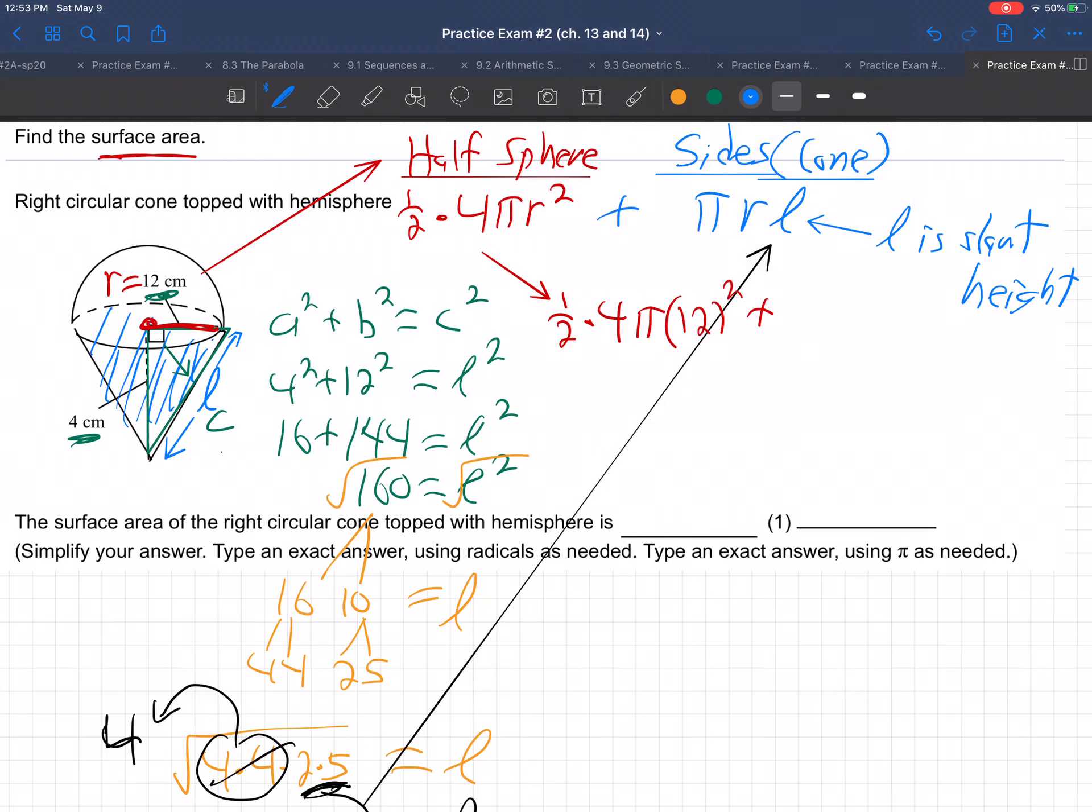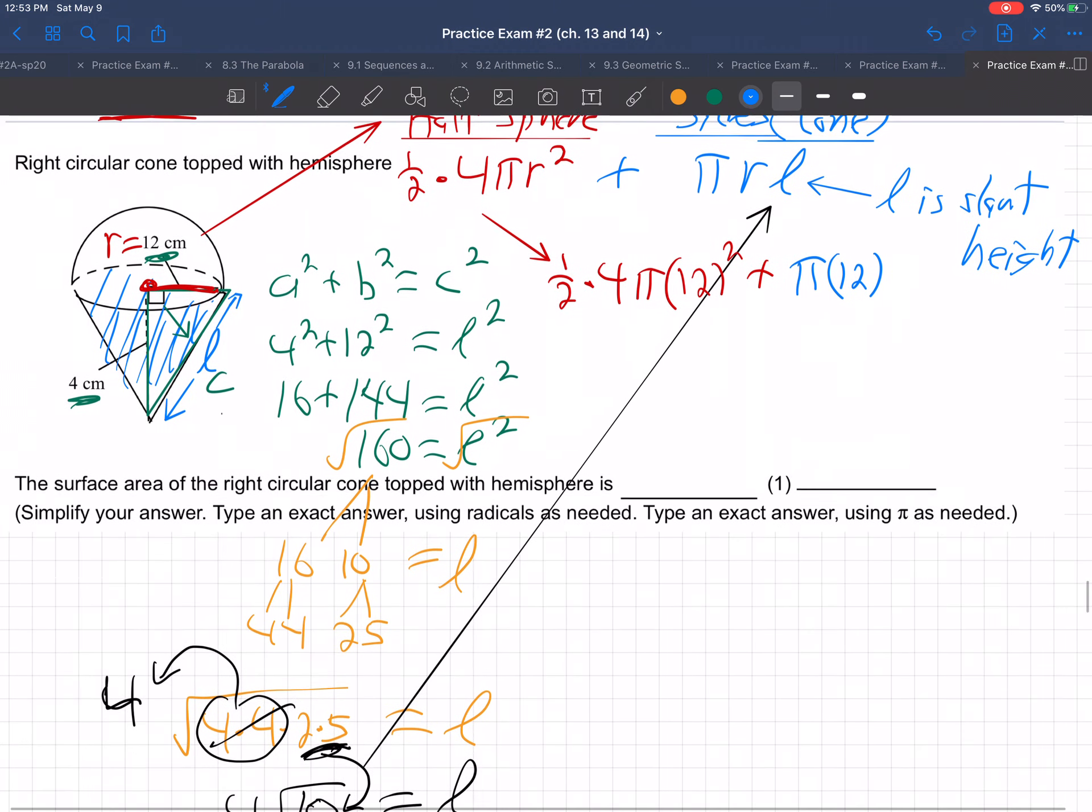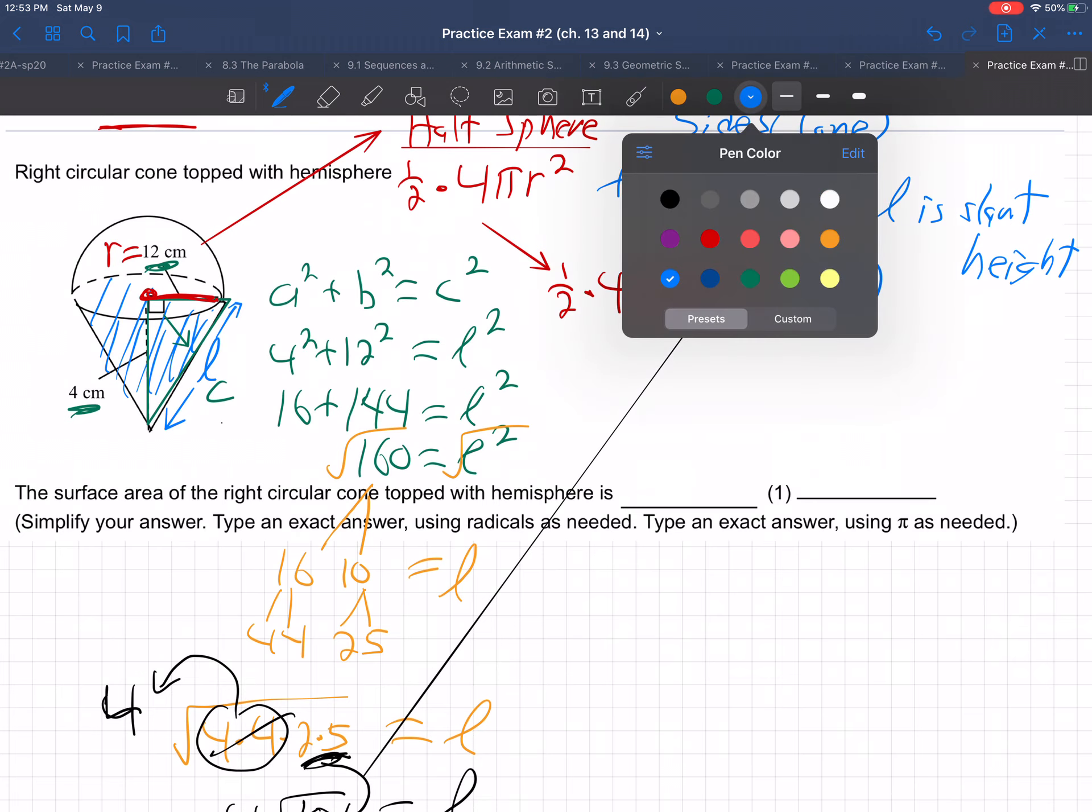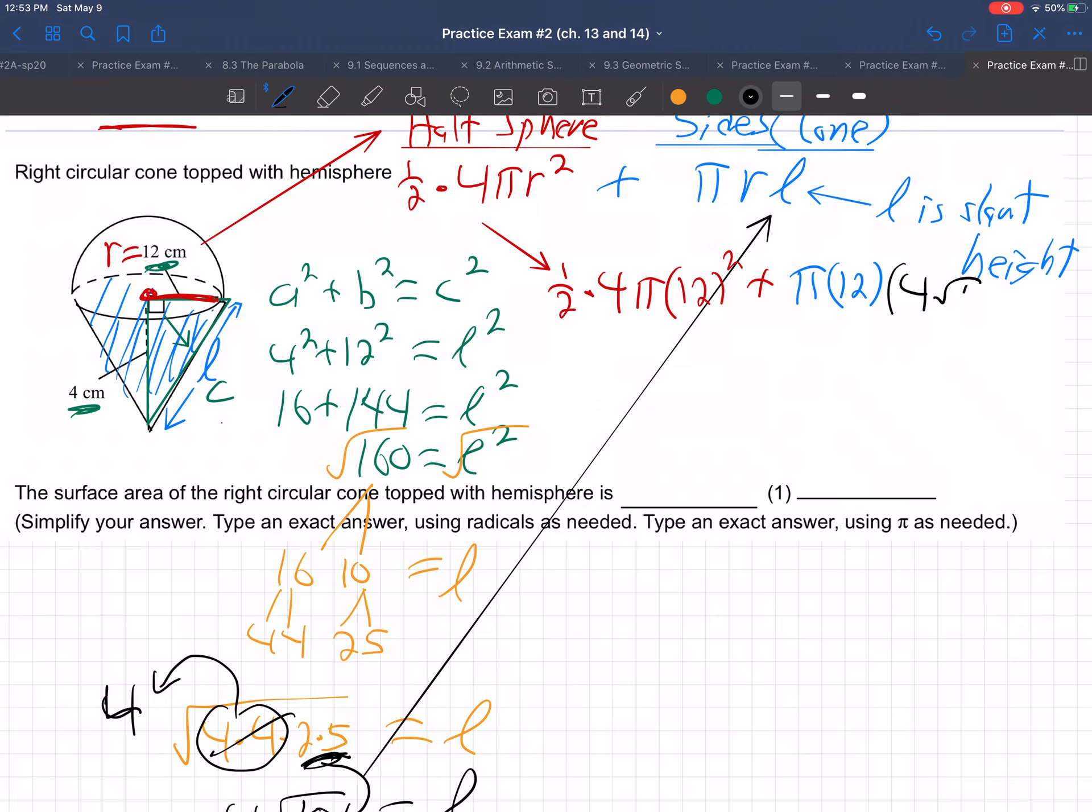and then for the sides, the cone sides, π, r again is 12, times the l, times the l, the slant height, 4√10. So I'll put that in there. 4√10, there is the 4√10. Okay, so let's figure this out.